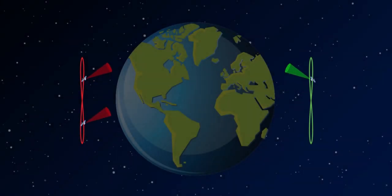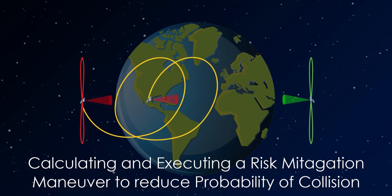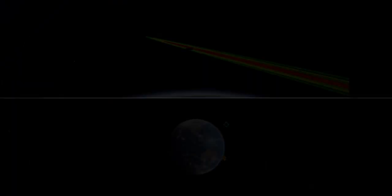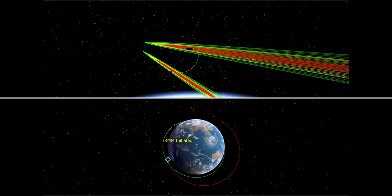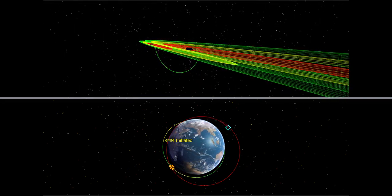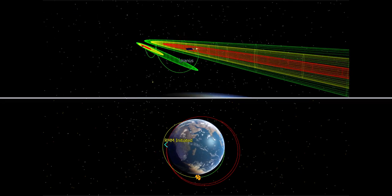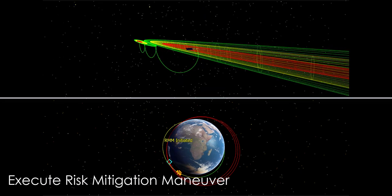It's crucial to plan evasive maneuvers when encountering a possible conjunction or unwanted rendezvous with other satellites. Spaceflight dynamicists need to calculate and execute risk mitigation maneuvers to reduce the probability of collision. Using FreeFlyer, you can easily simulate and execute orbital burns, allowing a spacecraft to strategically adjust its orbit and evade close approaches by an adversary or other object.